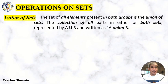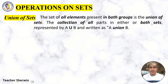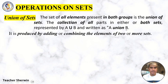Union of Sets: the set of all elements present in both groups. The collection of all parts in either or both sets is represented by A union B, and it is produced by adding or combining the elements of two or more sets.